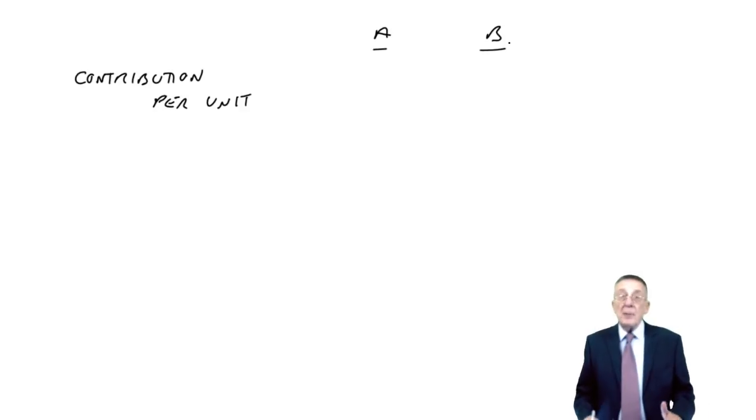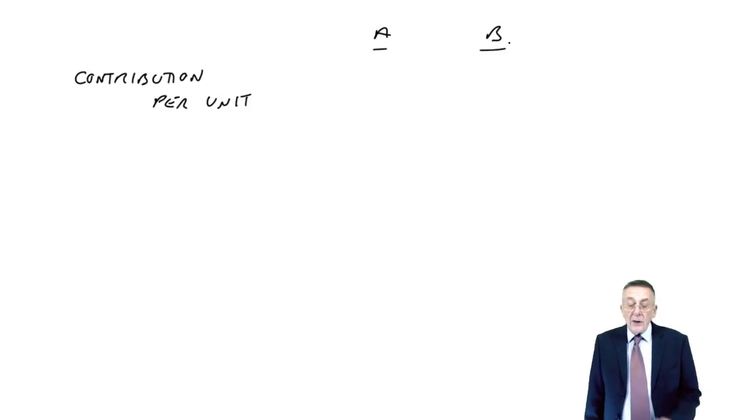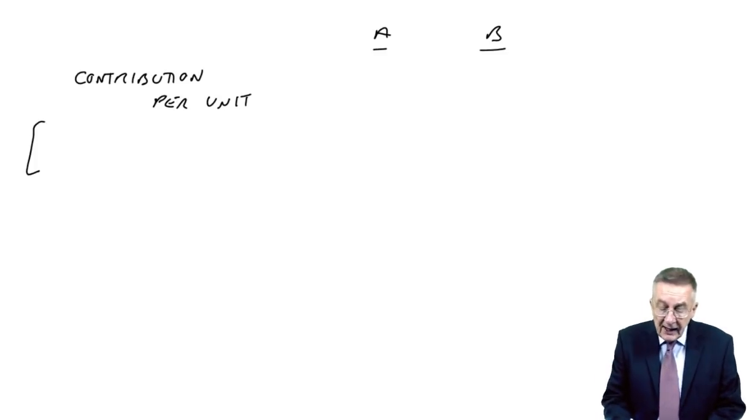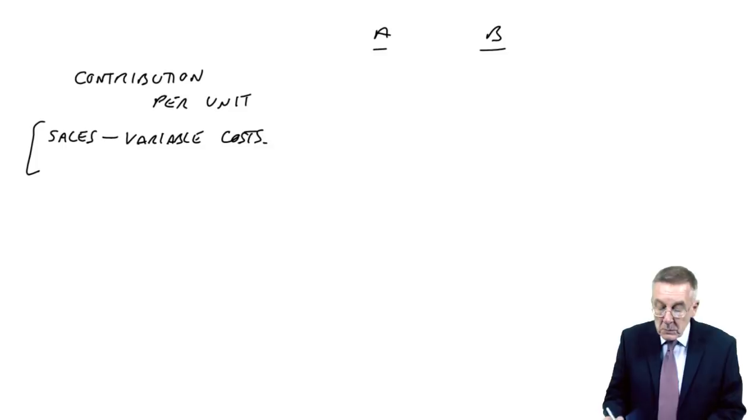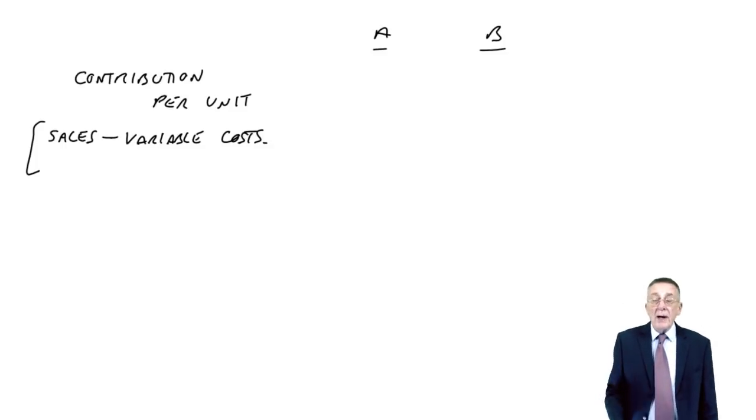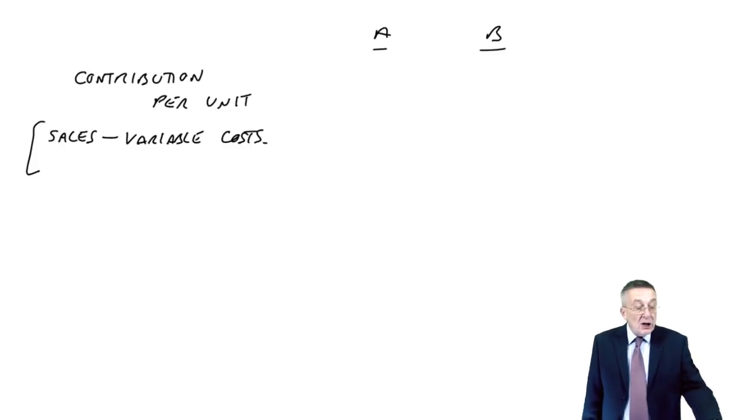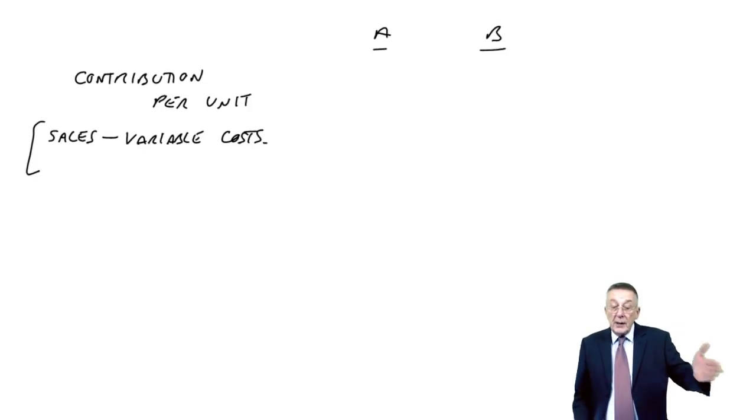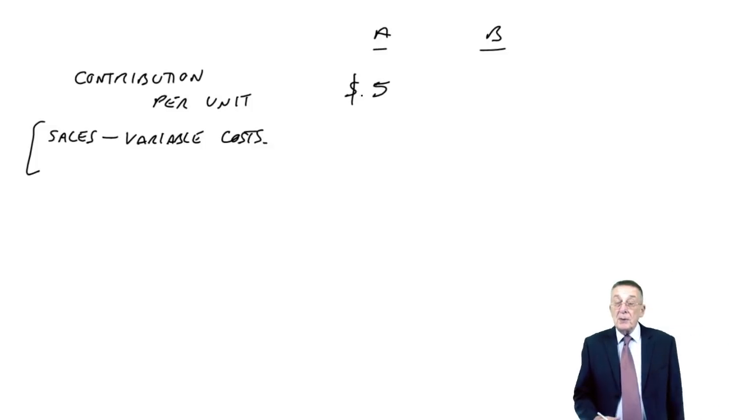Now, contribution is a term you should be aware of, because it can occur in lots of places in later chapters. What the contribution per unit is can be expressed in two ways. They both mean the same. It's either the sales minus the variable costs. Let's check for A. For A, the selling price is $25, the total of the variable costs is $8, $13, $20. And so $25 minus $20, A generates a contribution of $5 per unit.